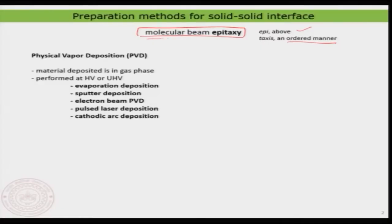Why is it called molecular beam? Because in the epitaxial process you are going to generate a beam of molecules or atoms that will get deposited on the surface. That is why it is called a molecular beam — atoms are coming one by one, or if you are depositing molecules, molecules are coming one by one onto the surface. Therefore it is called molecular beam epitaxy.